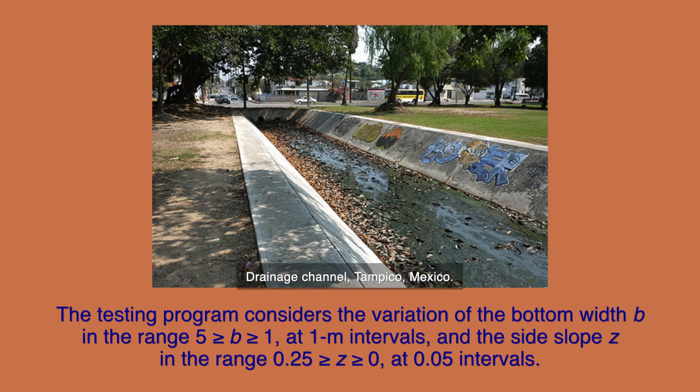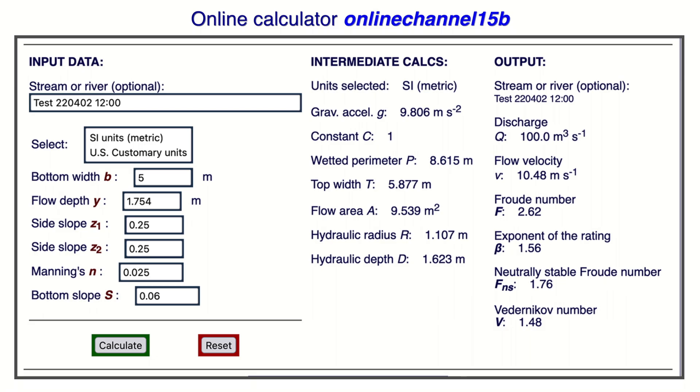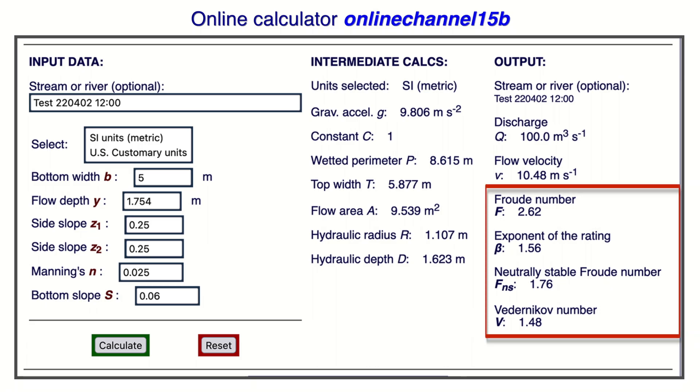The testing program considers the variation of the bottom width b in the range 5 ≥ b ≥ 1 at 1-meter intervals, and the side slope z in the range 0.25 ≥ z ≥ 0 at 0.05 intervals. The online calculator, online channel 15b, is used to calculate the relevant hydraulic variables, culminating in the values of rating exponent beta, Froude number F, and Bedernikov number V for each of 30 cases.